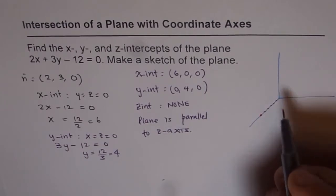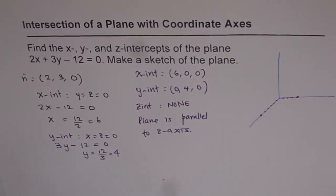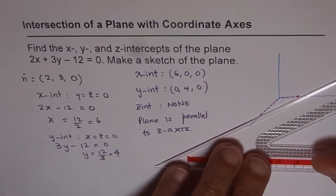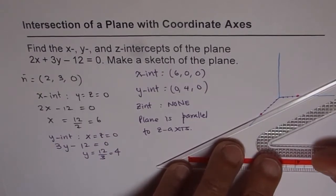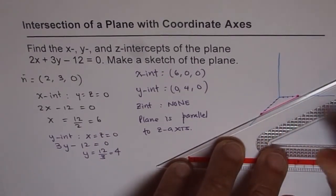And the y-intercept is 4. So we have 1, 2, 3, 4. So that's the point for the y-intercept. We can join these two points with the line. So you'll see this line is contained in the x-y plane itself.